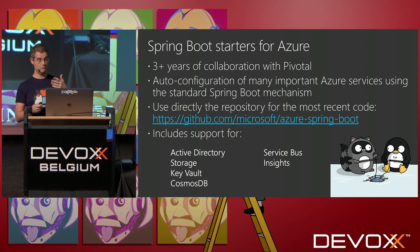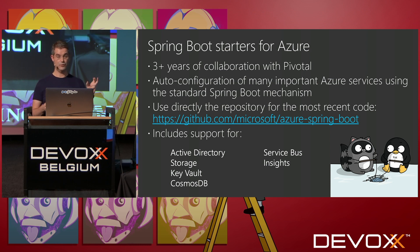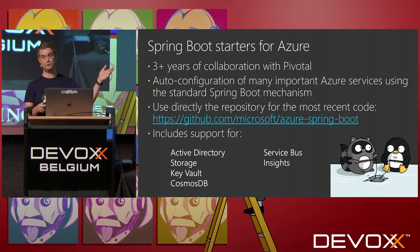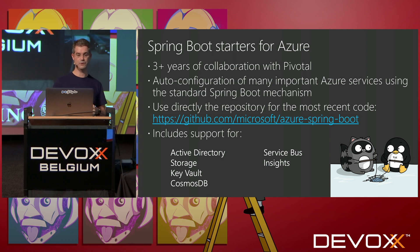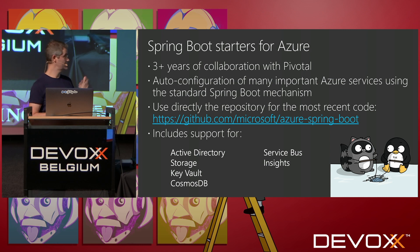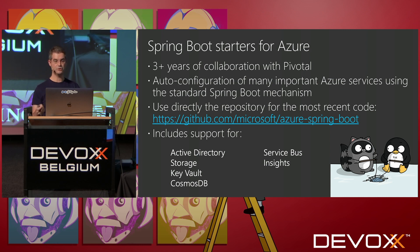If we take for example Azure Application Insights: you've got a Spring Boot starter, you just add it to your POM, add a configuration key, and you're all done — it's working out of the box. That's really great tooling if you are using Spring Boot on Azure and want to use specific Azure services.